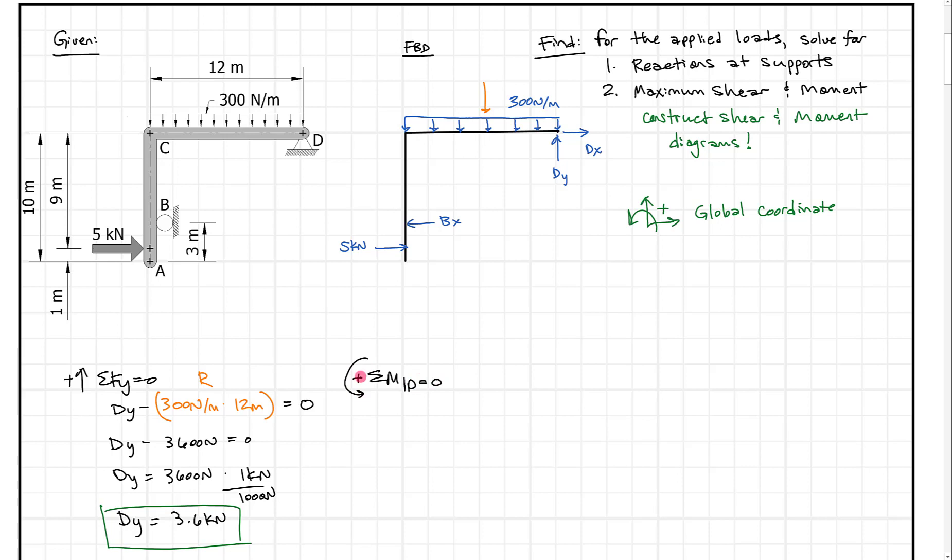Let's take sum of our moments about point D, which equals zero. Anything in the positive sense causes the structure to rotate counterclockwise. We have three forces that will cause a moment: five kilonewtons, Bx, and the resultant we'll call R. Let's start with five kilonewtons, which will cause counterclockwise rotation. That matches our sign convention, so it's a positive moment.